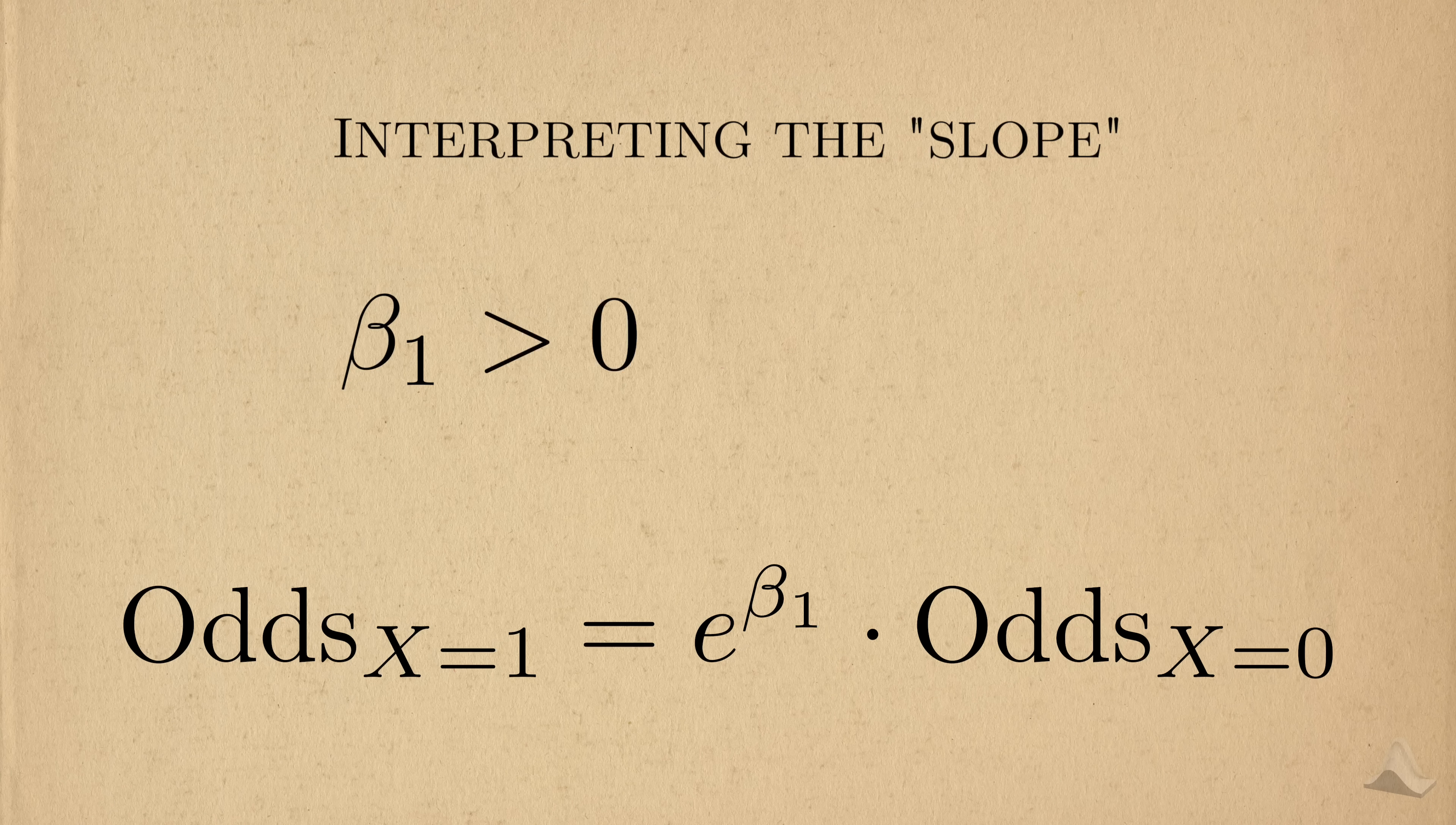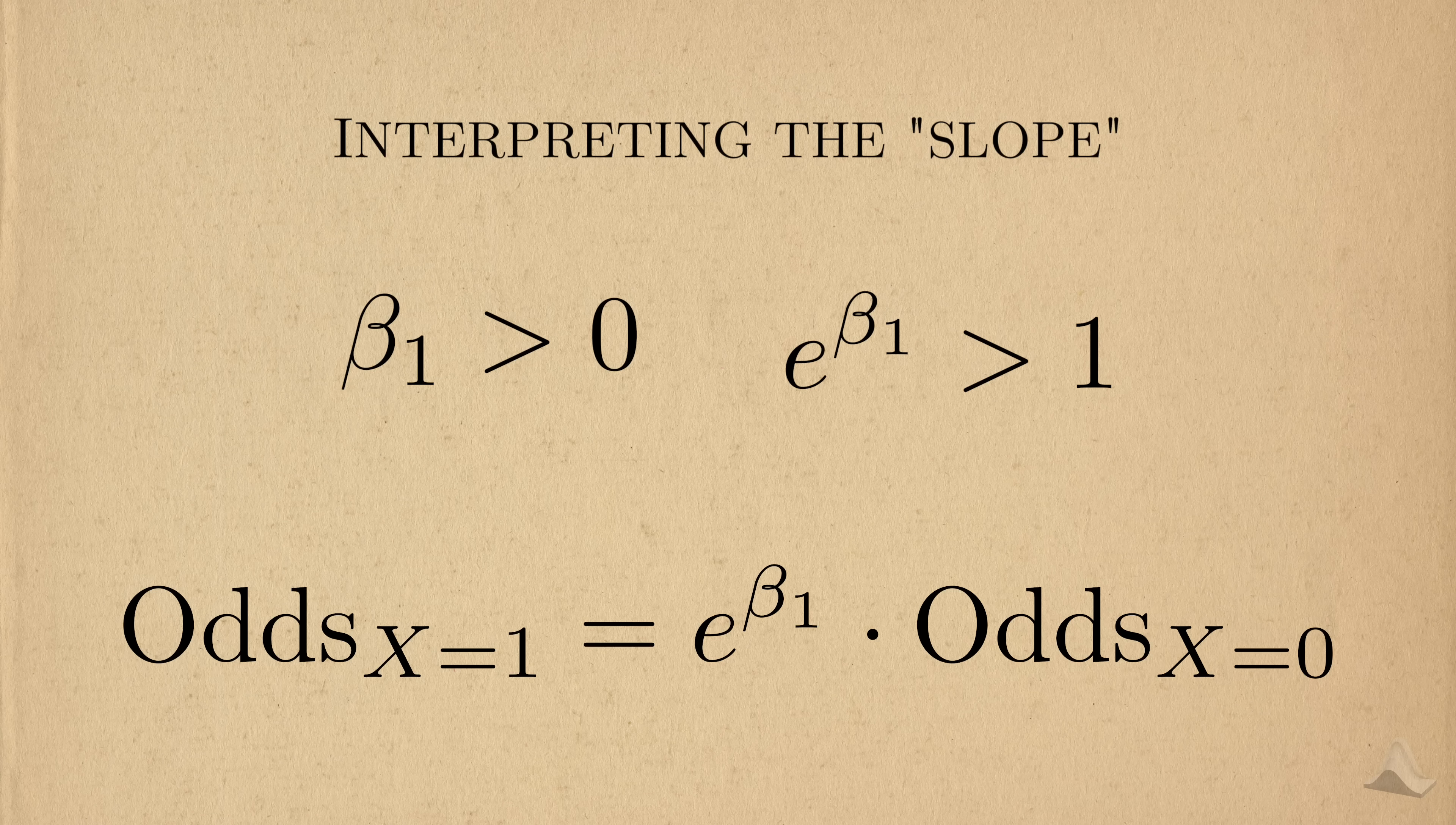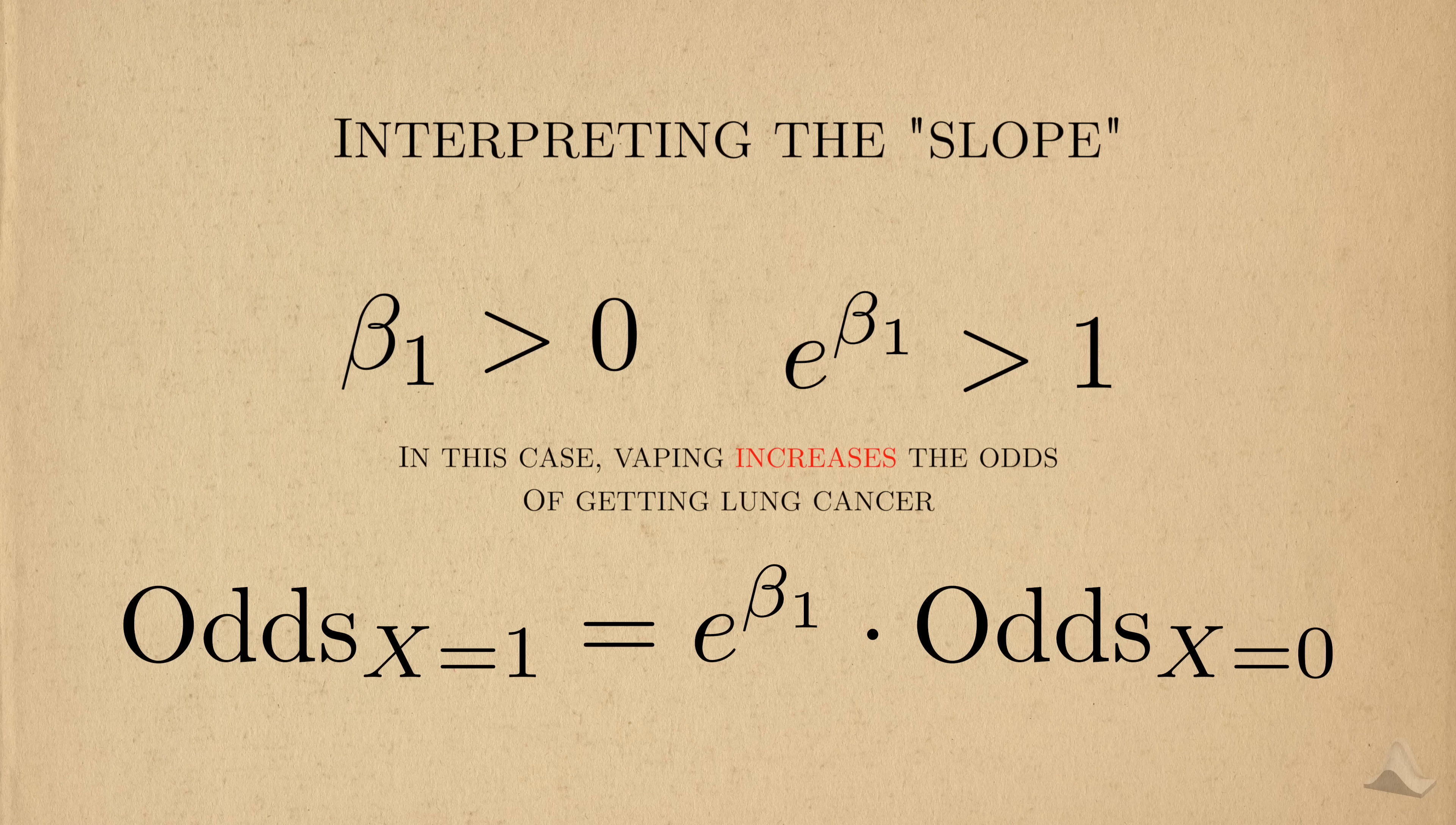What's more probable is that beta 1 will be positive, which means that e raised to beta 1 will be greater than 1. As a result, the vaping group has higher odds of getting lung cancer. So we would call it a risk factor for lung cancer instead.